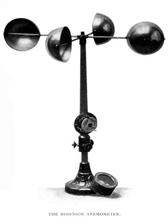One of the other forms of mechanical velocity anemometer is the vane anemometer. It may be described as a windmill or a propeller anemometer. Unlike the Robinson anemometer, whose axis of rotation is vertical, the vane anemometer must have its axis parallel to the direction of the wind and therefore horizontal.